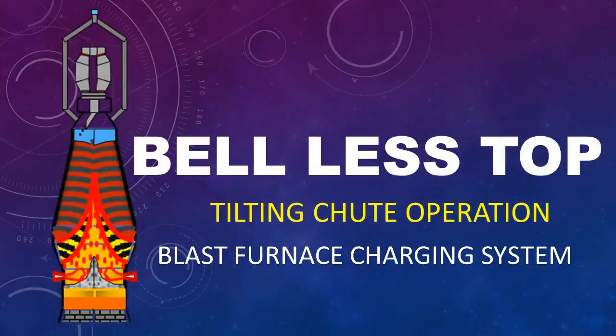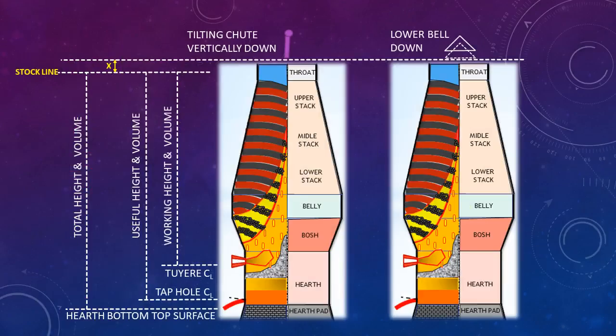Welcome to our channel. Today we will discuss BLT Bell Less Top charging system and tilting shoot operation of blast furnace. The distance or height from stock line to tuyere center line is known as working height of the furnace, and the related volume is working volume. The distance from stock line to tap hole center line is known as useful height, and the related volume is useful volume.